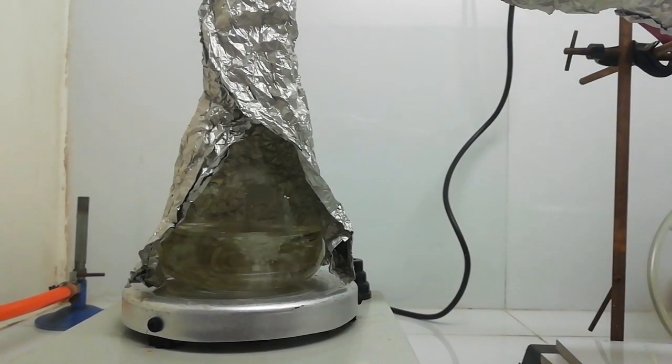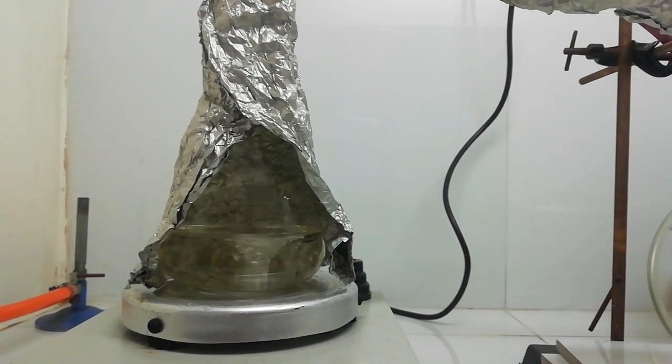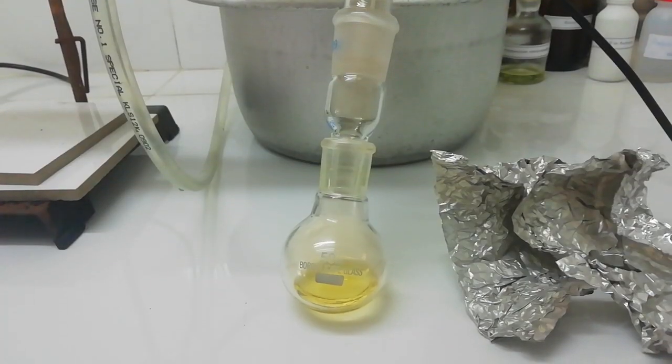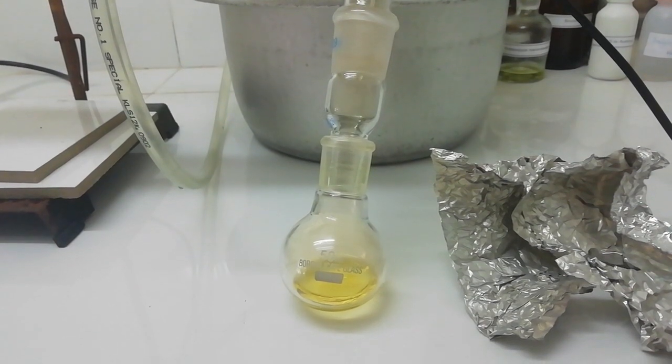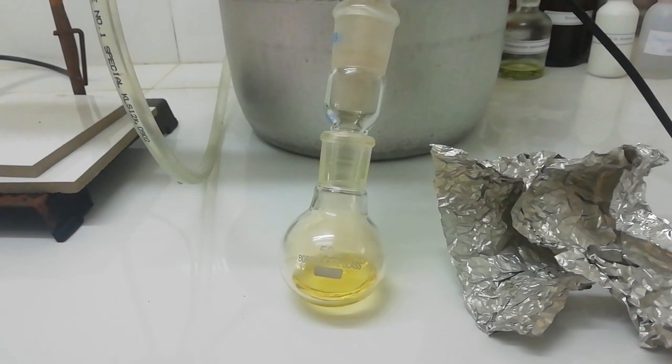Now you can see our nitration mixture is boiling. In the receiving flask, this yellow color product is our red fuming nitric acid.